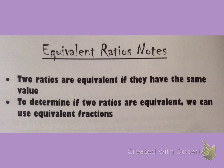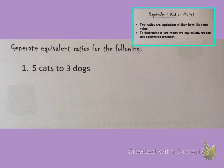That means in this video and on this note sheet, we're going to take all of the ratios we're given and we're going to write them in fraction form. So let's look at our first problem. It says generate equivalent ratios for the following, and the first one is 5 cats to 3 dogs, that's a ratio.